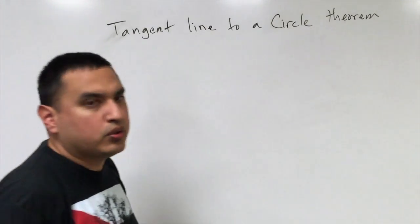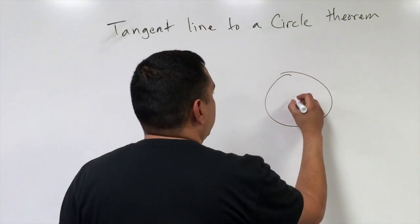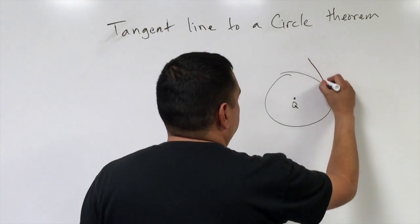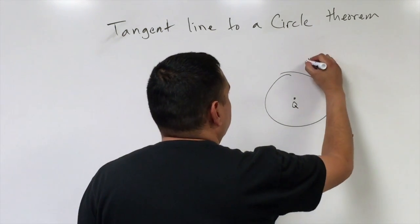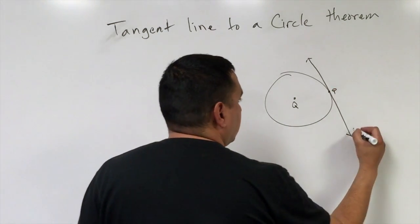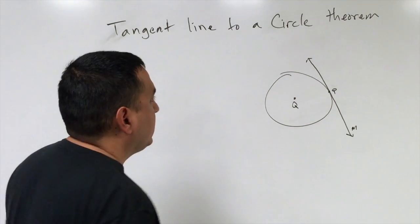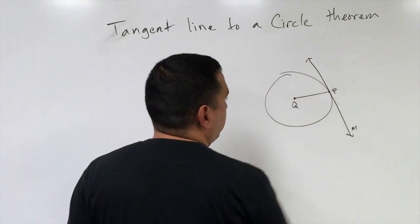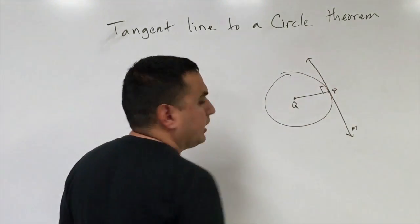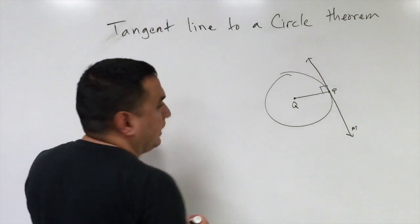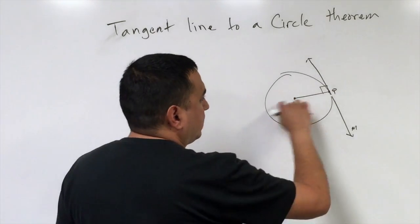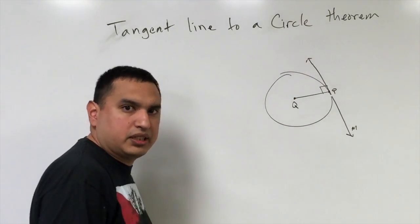Next we talk about the tangent line to a circle theorem. If Q is the center of the circle, and I draw a tangent line M with point of tangency P, and I draw the radius from Q to P, these two lines intersect at a 90-degree angle. So the theorem says the radius and the tangent line are perpendicular.